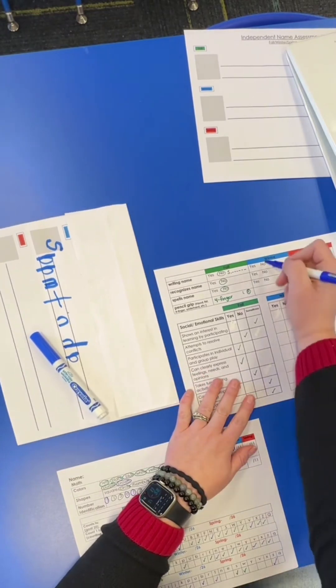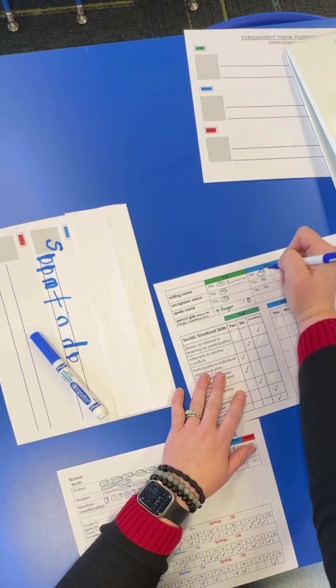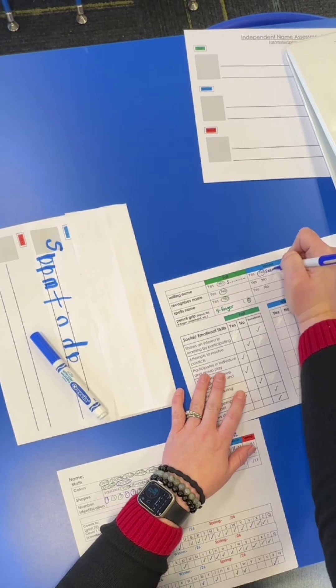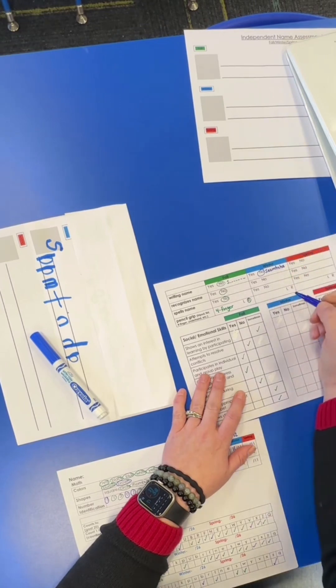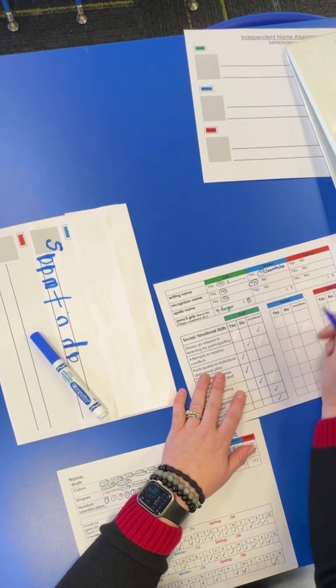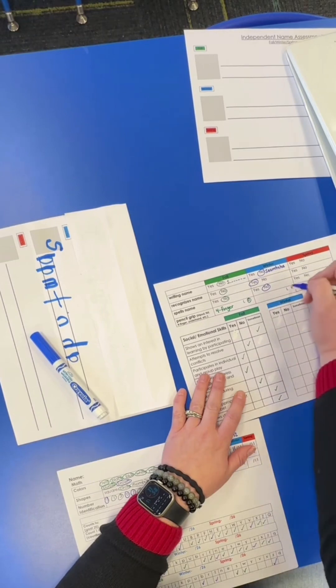I will circle no because the student has not mastered her name yet, but I'll write all of the letters that she wrote down, and it shows that she is very close. We do have some letter reversals, but that's pretty typical in preschool. We use name tags in our classroom, so I do know if my students can recognize their name, so I can circle that really quickly. And lastly, I'll ask my student if they can spell their name. As they're writing their name, I will be checking their pencil grip and writing that down as well.